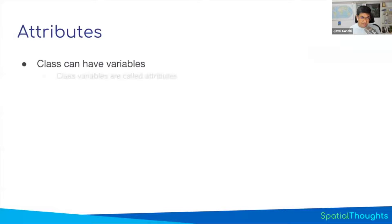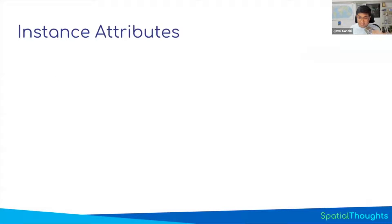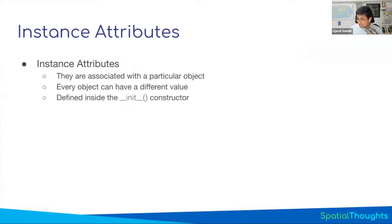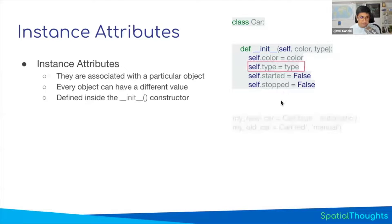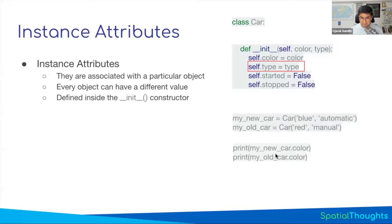There are two types of attributes: class attributes and instance attributes. Instance attributes are associated with a single object. For example, self.color, self.type, self.start, self.stop — these variables are associated with the particular object, so the color will be different for each object, the type will be different for each object. These are called instance variables or instance attributes. You take the object and say dot variable name, and you get the value for that particular variable.